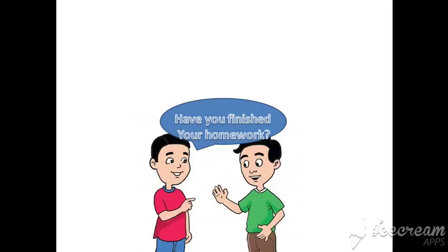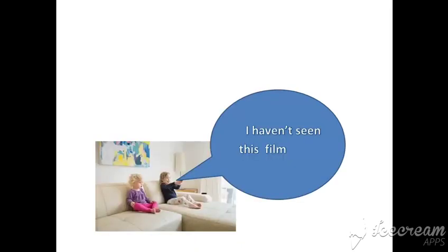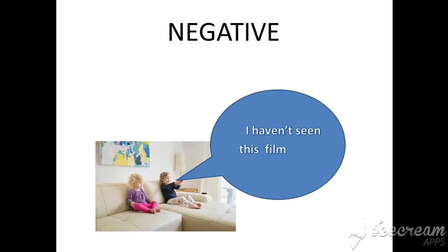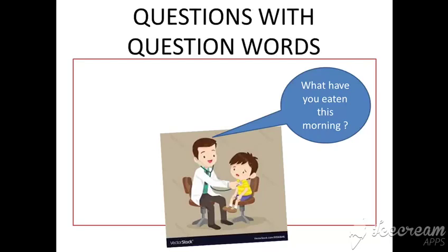One boy is asking the other: 'Have you finished your homework?' — this question is in the present perfect using 'have' + pronoun + past participle. Here we can see two girls talking; one says 'I haven't seen this film' — a negative sentence using 'haven't' + past participle 'seen'. A doctor asks a child: 'What have you eaten this morning?' — using the question word 'what' + 'have' + pronoun + past participle 'eaten'.